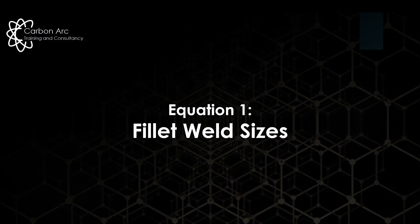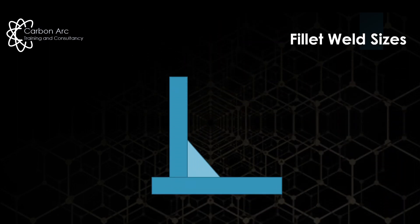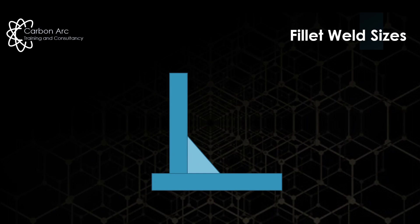Our first equation is fillet weld sizes, and by far we're starting with the easiest ones. The C-SWIP exams love to ask questions around calculating the leg length size or calculating the throat thickness size, based on them giving you one of the values — so definitely something you need to have in your head.